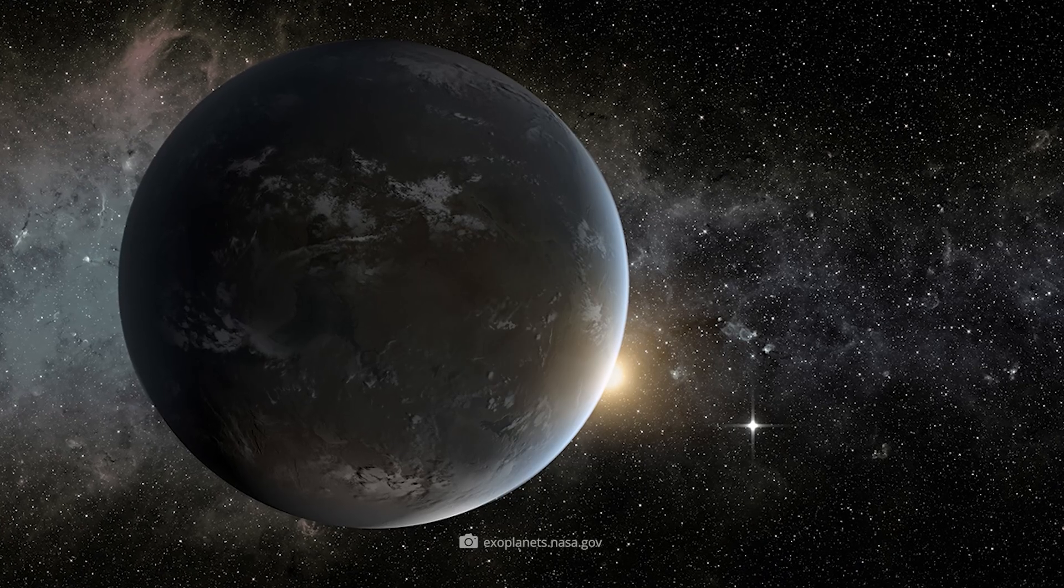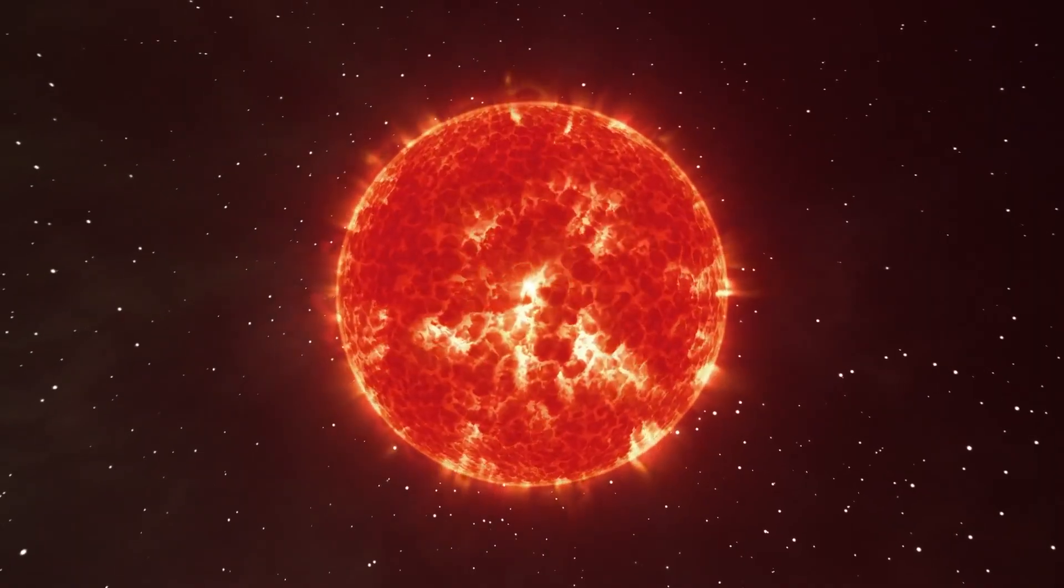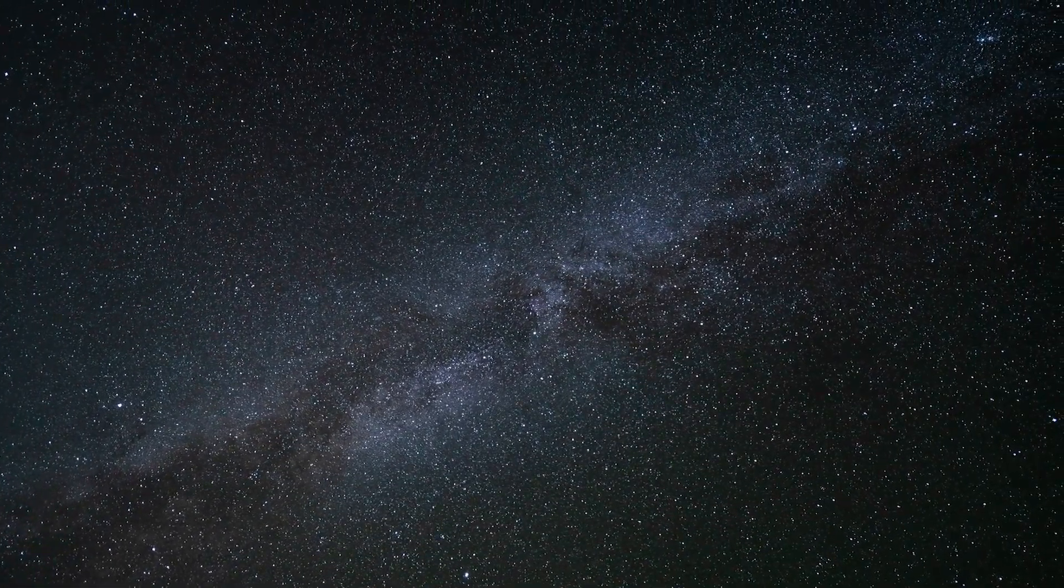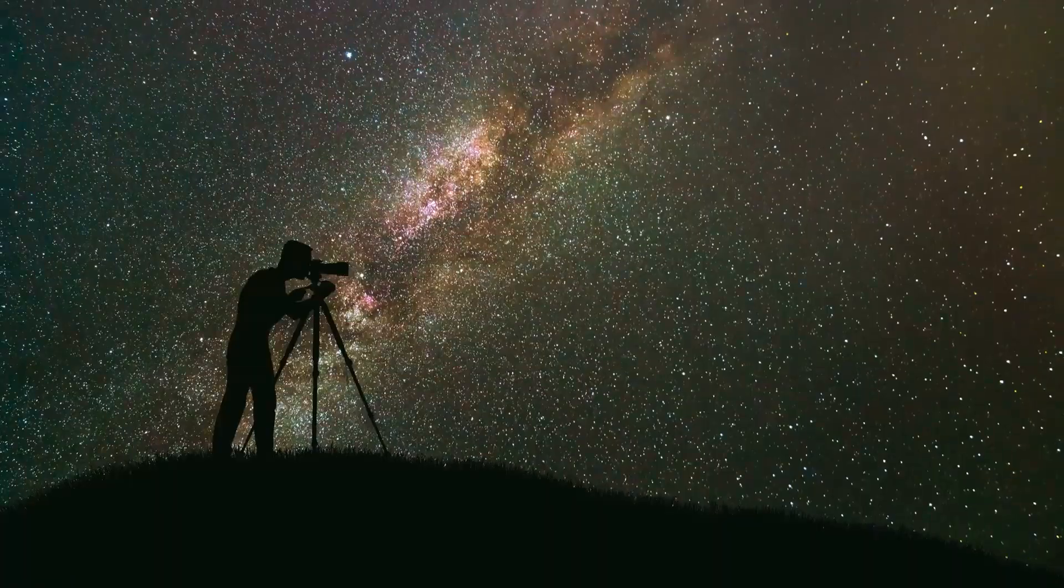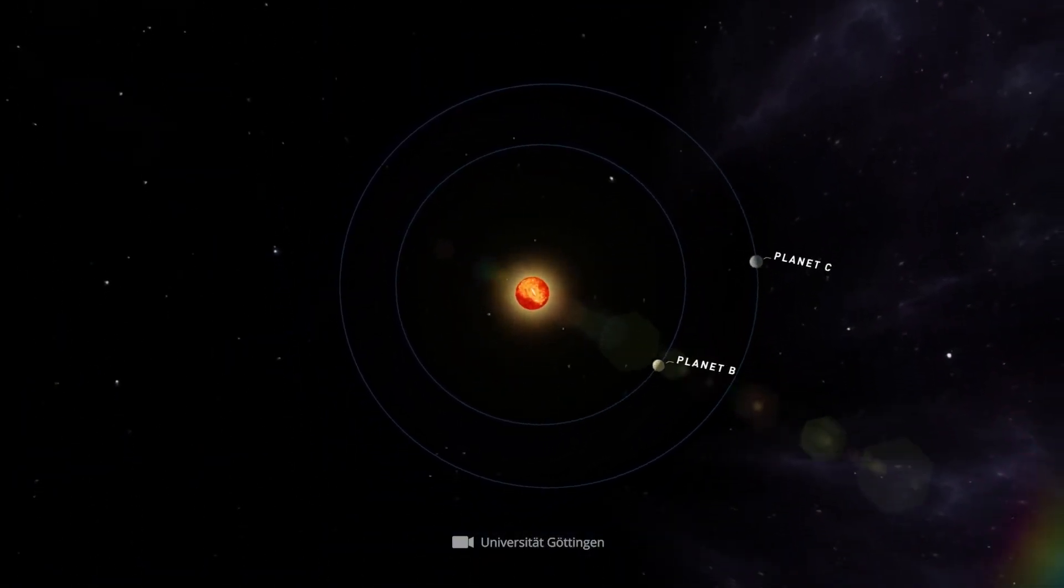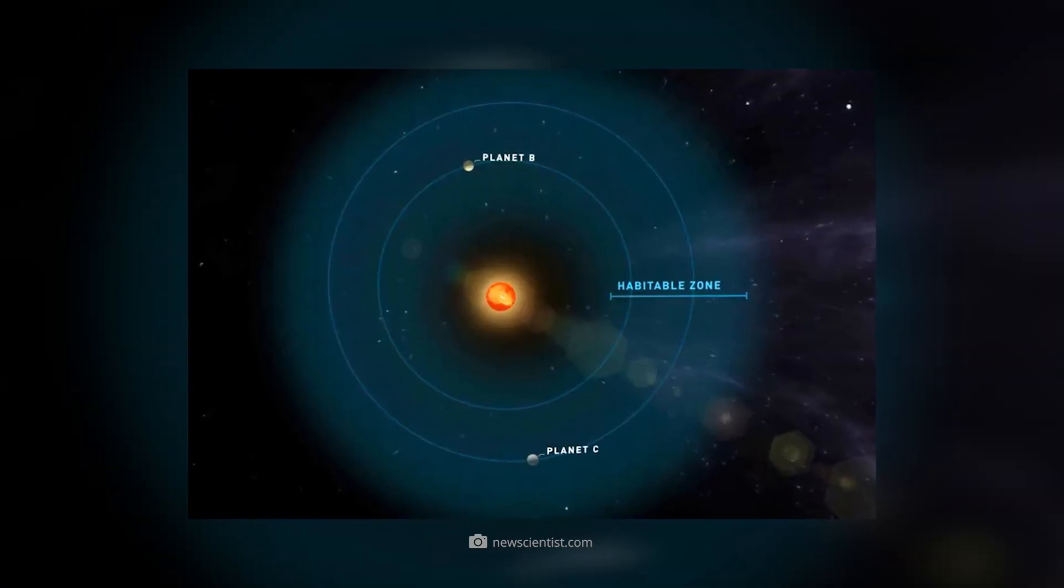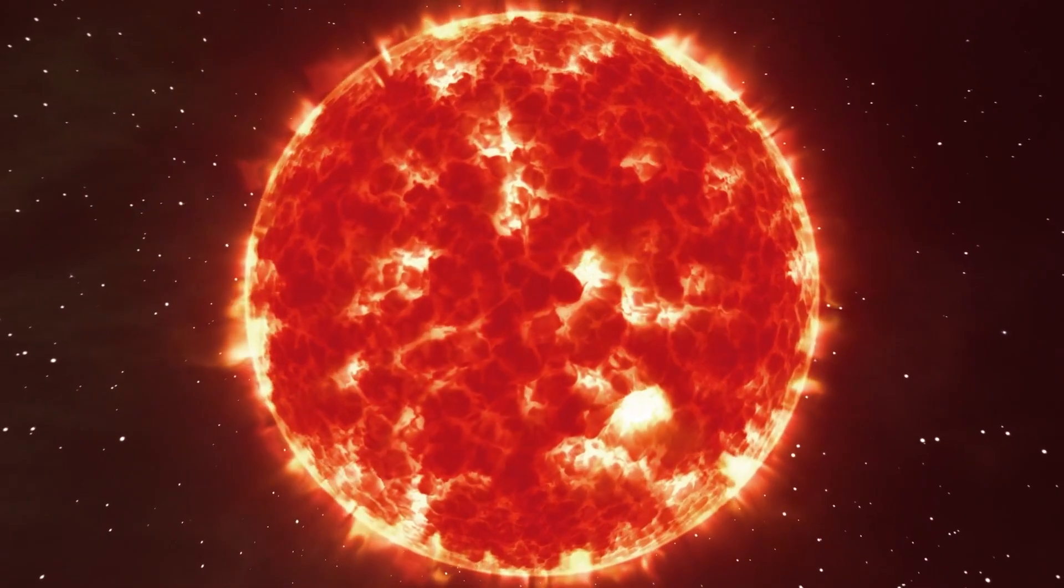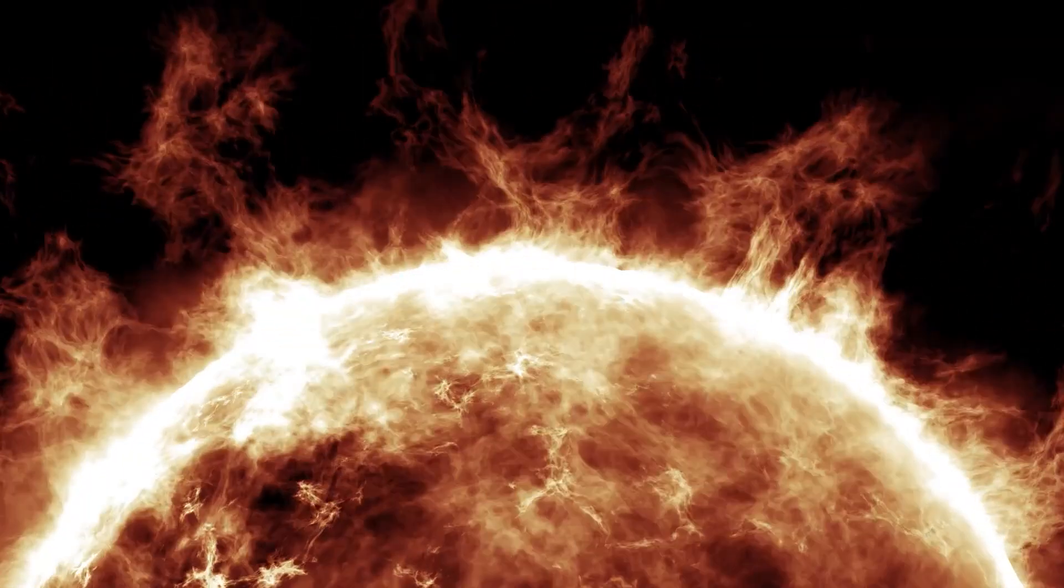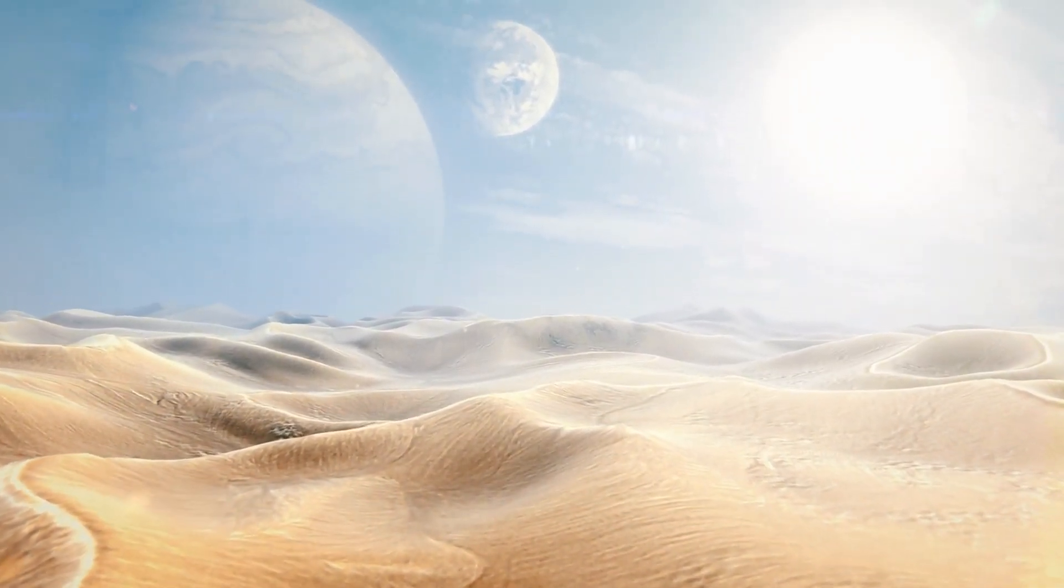With a value of 0.95, Teegarden b advances to the current top spot. Its namesake host star, a red dwarf in the constellation Aries, is located about 12.5 light-years from the Sun. During the multi-year investigation, it became apparent that the central star is orbited by two planets about the size of Earth. Both exoplanets are located with the habitable zone of their system. Since the red dwarf, which weighs 0.08 solar masses, is considered to be comparatively quiet due to its great age of more than 8 billion years, its planetary companions are basically considered to be life-friendly.